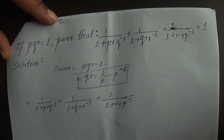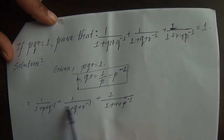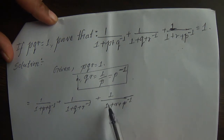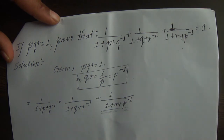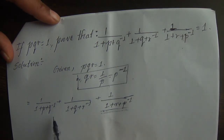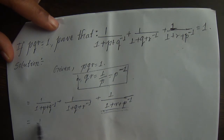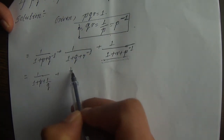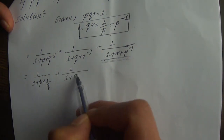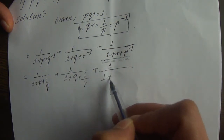This is the question. I am going to choose the denominator. This is the process of using the denominator. I will choose the denominator: 1 by 1 plus P plus Q, plus 1 by Q, plus 1 by 1 plus Q plus R, minus 1 by R, plus 1 by 1 plus U denominator.